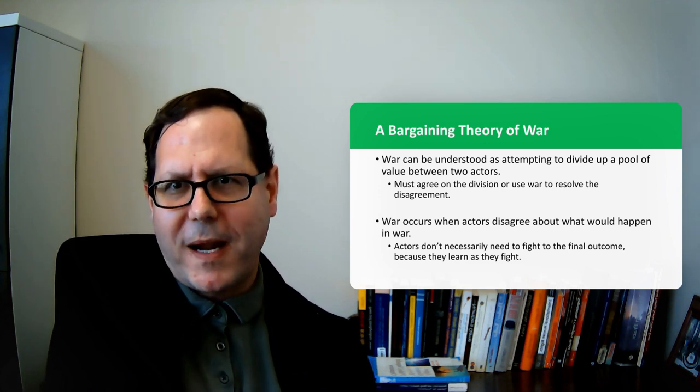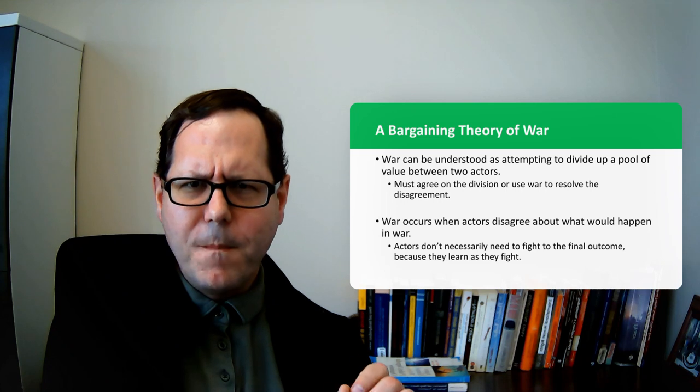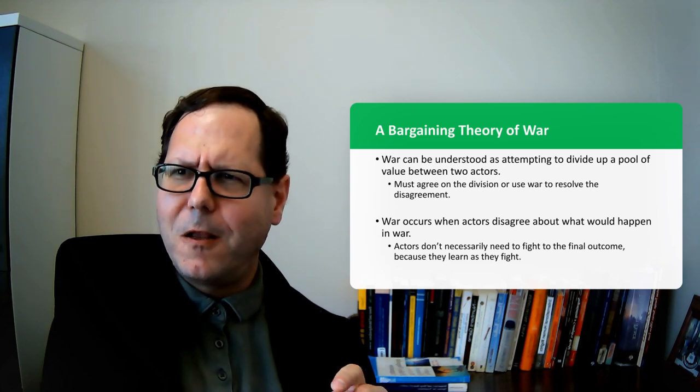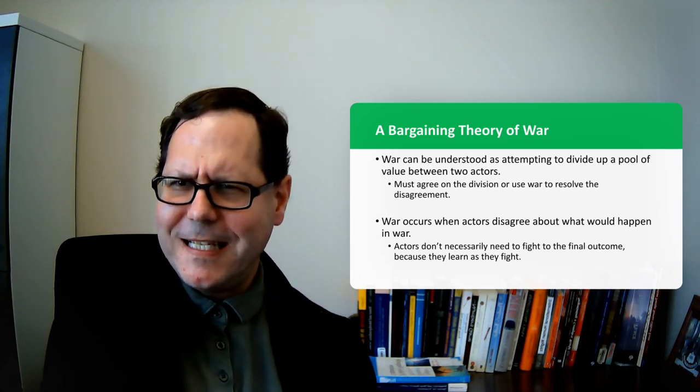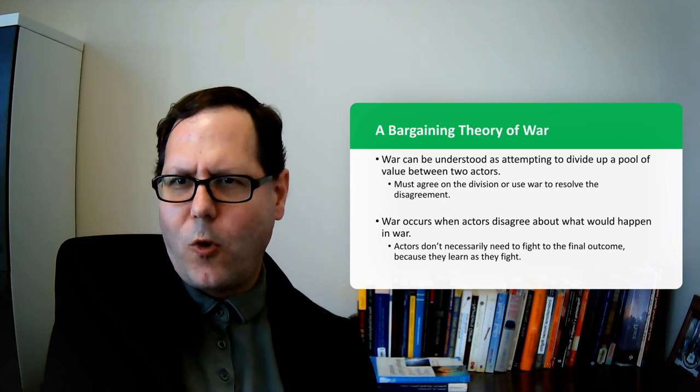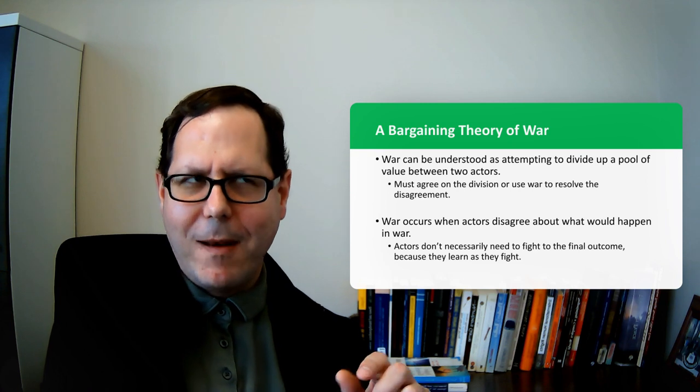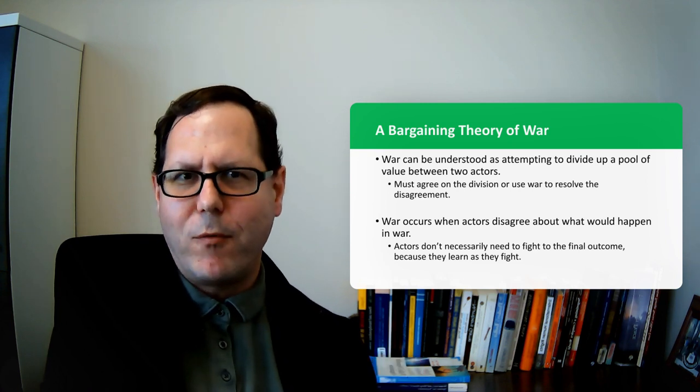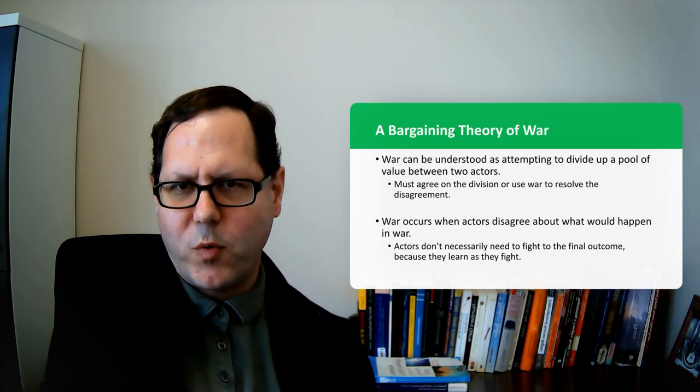From the bargaining theory of war perspective, war is about clarifying that uncertainty about what would happen if there was war, so that states can return to the bargaining table and more efficiently reach a solution that reflects the distribution of power between them.